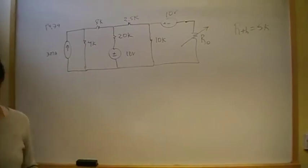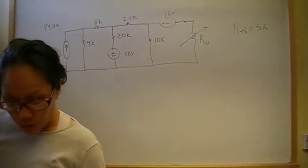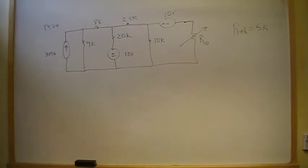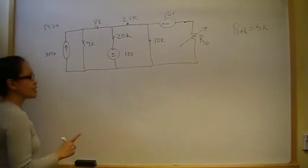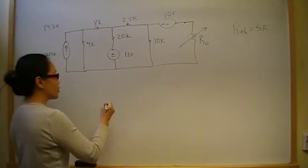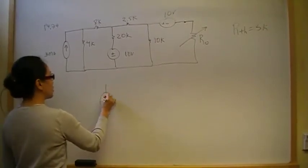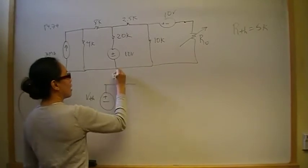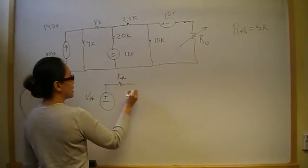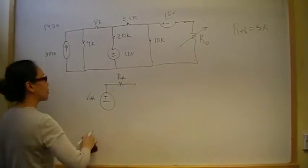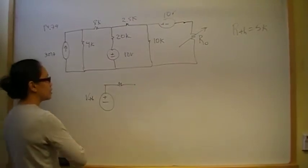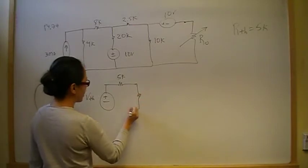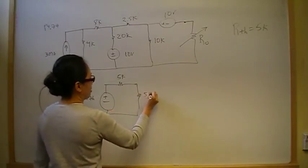In part B, we need to find the maximum power that can be delivered. To maximize power, the load must equal the Thevenin resistance, so R-naught equals 5k. We need to find V-Thevenin in order to determine that maximum power. So R-Thevenin is 5k, and to maximize power, the load must also be 5k.